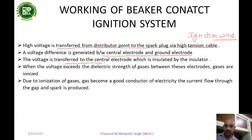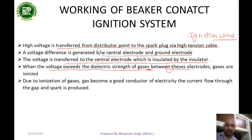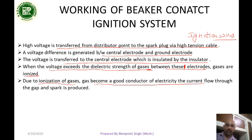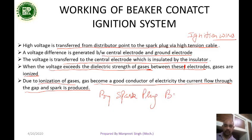The voltage is transferred to the central electrode, which is insulated by the insulator. When the voltage exceeds the dielectric strength of the gases between the electrodes, the gases are ionized. Due to ionization, the gas becomes a good conductor of electricity, current flows through the gap, and a spark is produced by the spark plug, which burns the fuel mixture in the engine cylinder.